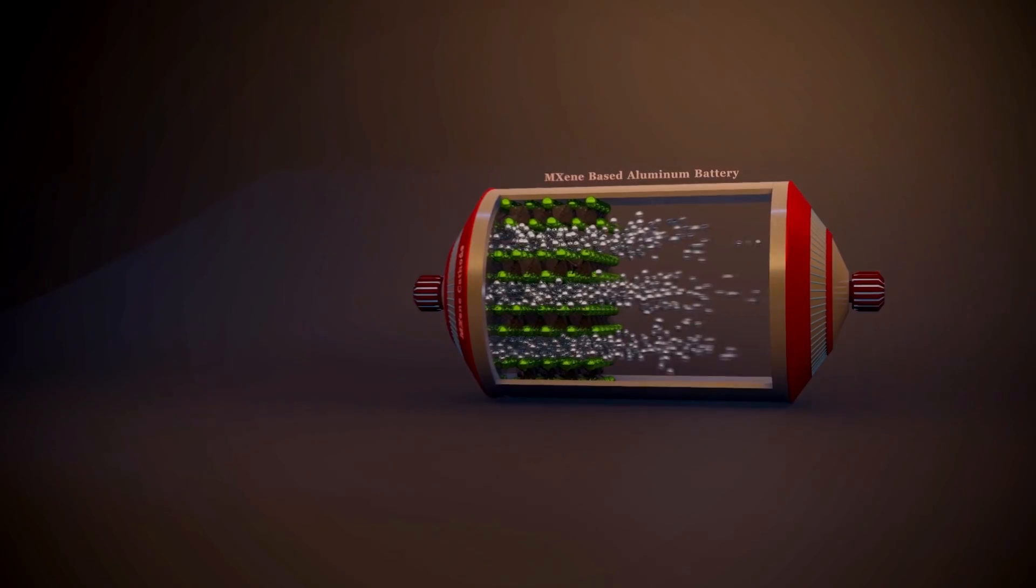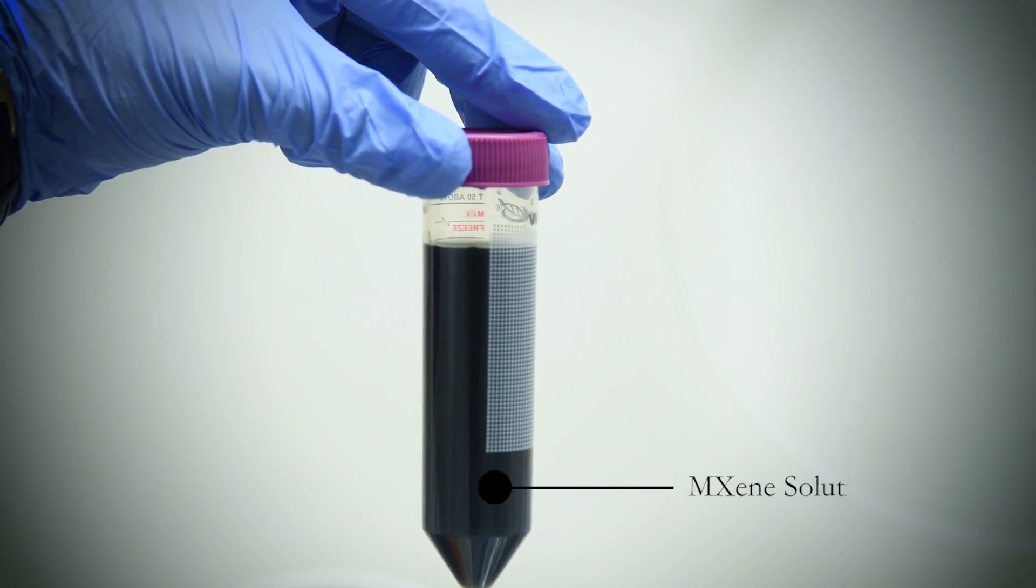Our idea was that a family of two-dimensional materials called MXenes could be a good cathode material for future aluminum batteries.